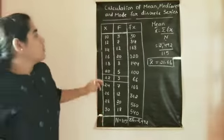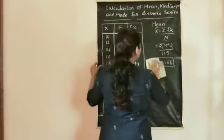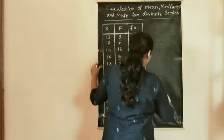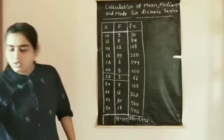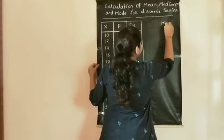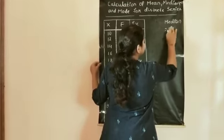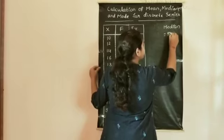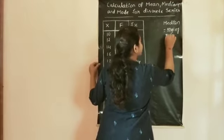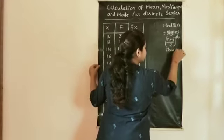Now we move on to finding the median. To find the median for the given discrete series, we use the formula: median is equal to the size of the (n + 1) divided by 2th item in the series.